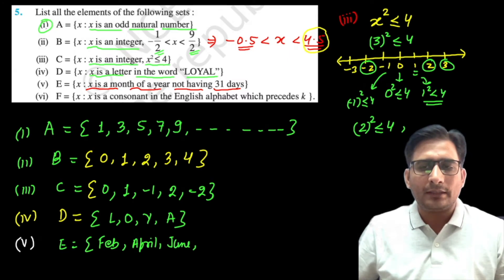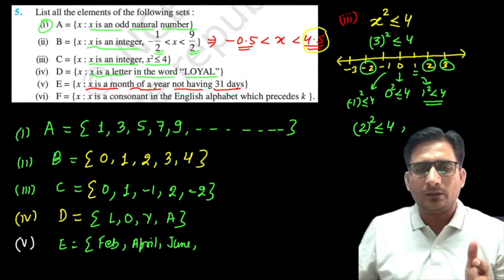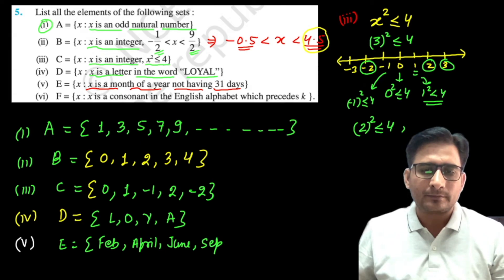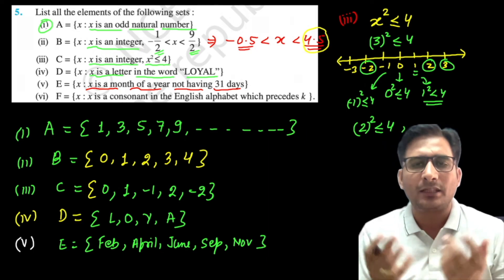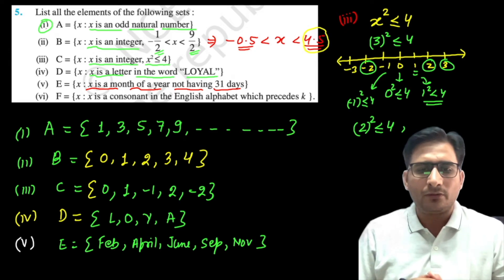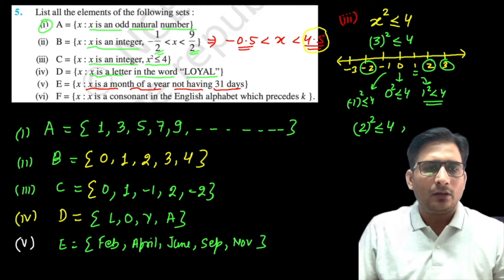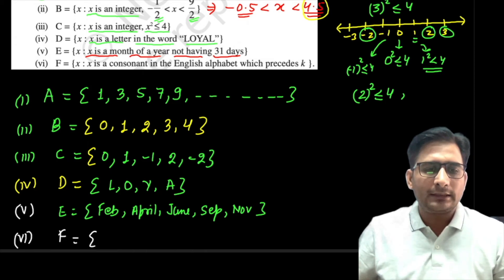Continuing months: March has 31, skip; April has 30, include; May has 31, skip; June has 30, include; July has 31, skip; August has 31, skip; September has 30, include; October has 31, skip; November has 30, include; December has 31, skip. So the answer is {February, April, June, September, November}.